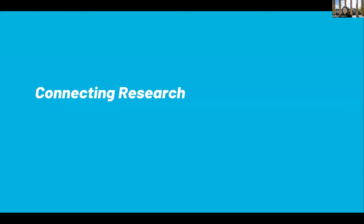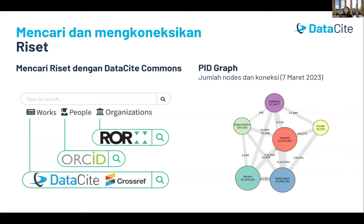Intinya adalah mengkoneksikan setiap entitas dari riset yang dilakukan. Bapak/Ibu dapat mulai membiasakan diri untuk mencari luaran riset dengan DataCite Commons — saat mencari, tidak hanya akan menemukan artikel terkait, namun juga tipe luaran riset lain seperti dataset maupun grey literature. Memaksimalkan penggunaan PIDs untuk individu, organisasi, maupun luaran riset lainnya seperti DOI. Dengan ini, Bapak/Ibu bisa melihat visualisasi dari konektivitas antar tipe luaran riset yang saling terkait, seperti dataset X untuk artikel A atau C, dan koneksinya dengan person, organisasi, funder, dan lain sebagainya — seperti yang terlihat pada jumlah nodes dan koneksi PID Graph.